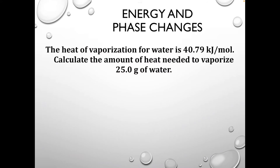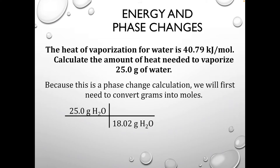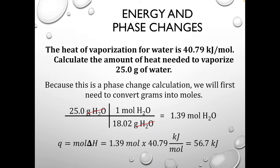Let's try this one. The heat of vaporization for water is 40.79 kilojoules per mole. Calculate the amount of heat needed to vaporize 25 grams of water. Since it's a phase change, we need moles — convert 25 grams to moles using the molar mass of water. It would be helpful to memorize the molar mass of water since we use it a lot. Once we convert grams to moles, we use Q equals mole times delta H vape. Multiply moles by 40.79 kilojoules per mole to get our answer in kilojoules.